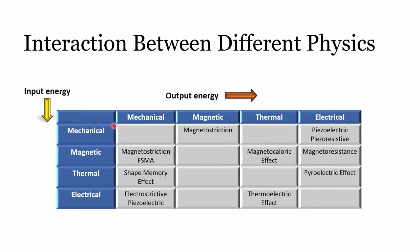On the left side of this slide we have input energy and on the right side output energy. If the input is mechanical force and the output is magnetic energy, that effect is known as magnetostriction. If input is mechanical and output is electrical current, it is known as a piezoelectric or piezo resistive device. If input is magnetic and output is mechanical, it is magnetostrictive; if output is thermal, it is the magnetocaloric effect; and if output is electrical, it gives magnetoresistance. If input is thermal, you get the shape memory effect.